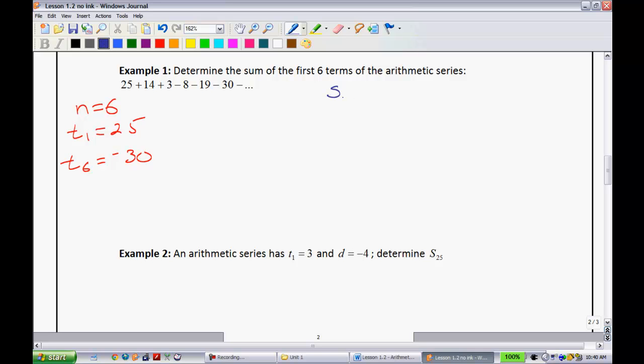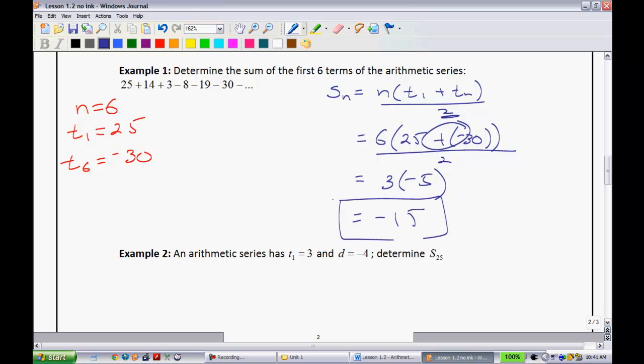Now, I'll write our equation formula that we had on the previous page. Sn is equal to n, all multiplied by T1, our first term, plus our last term, all divided by 2. How many terms do we have? We have 6. The first term was 25. The last term was negative 30. And we divide by 2. Make sure we simplify here. I'm going to go 6 divided by 2 is 3. And then I'll simplify in the brackets. 25 plus a negative 30. Remember, when you have these two terms, you have a negative. That gives you a negative 5. Negative 5 times 3 is negative 15. It's relatively straightforward to do one like that. Like I said, you could have probably added all those together.